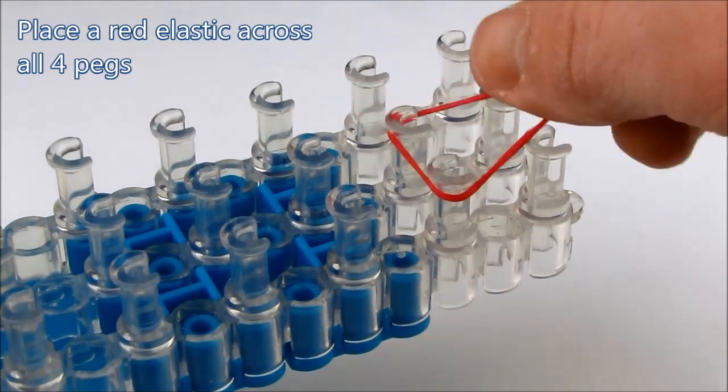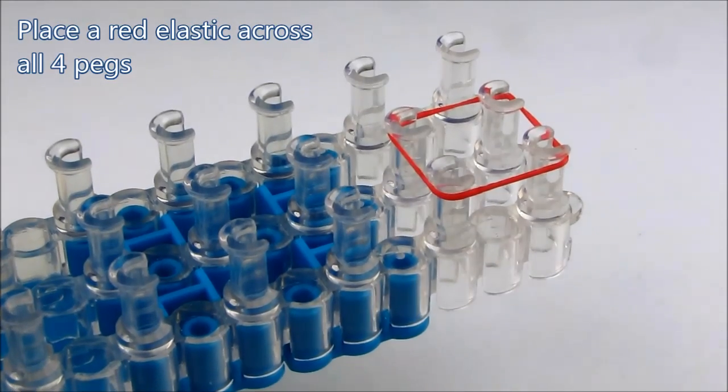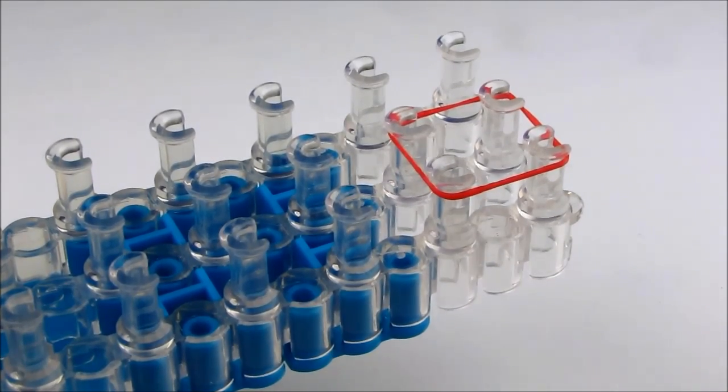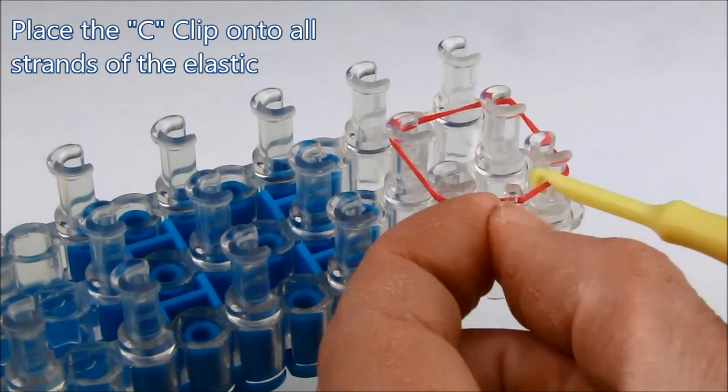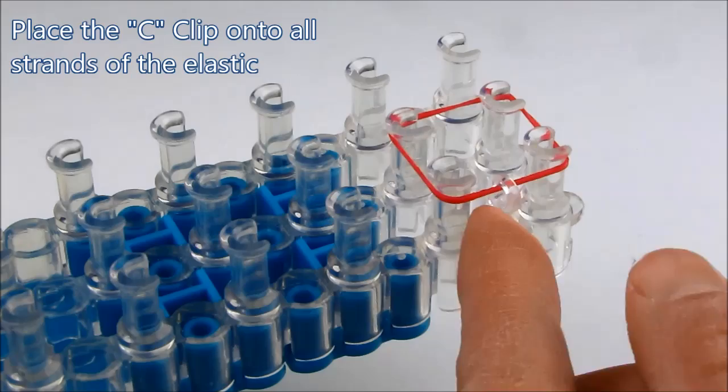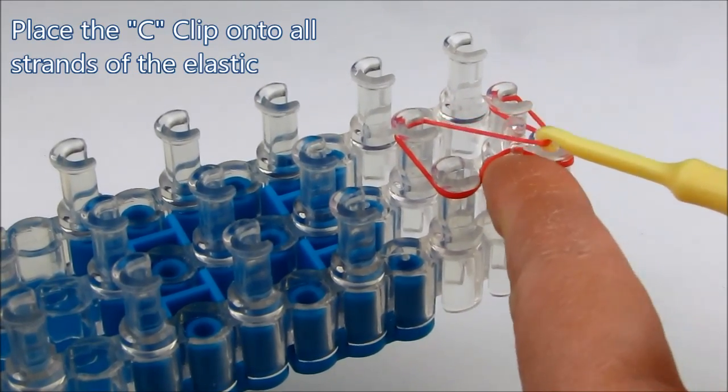Place a red elastic across all four pegs. Now place a C-clip onto all strands of the elastic. You could use your loom tool to help you with this.